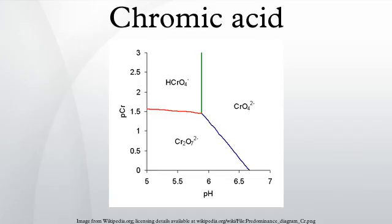Chromic acid may also refer to the molecular species H2CrO4, of which the trioxide is the anhydride. Chromic acid features chromium in an oxidation state of +6. It is a strong and corrosive oxidizing agent.